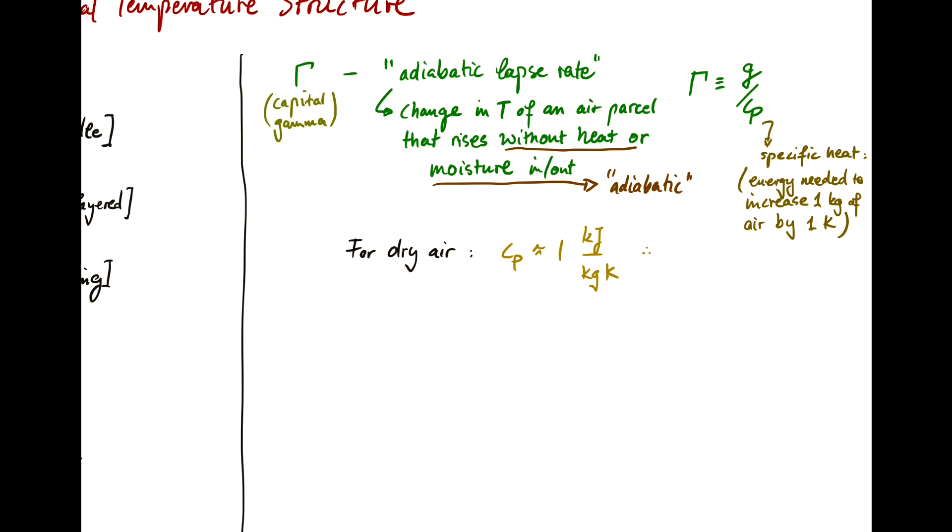And if you plug the cp, this one, into the equation for gamma up here, you'll find that the lapse rate is about ten kelvin per kilometer. So that just means that if you were to go up one kilometer from sea level up a mountain that's one kilometer high, it would be ten kelvin cooler.